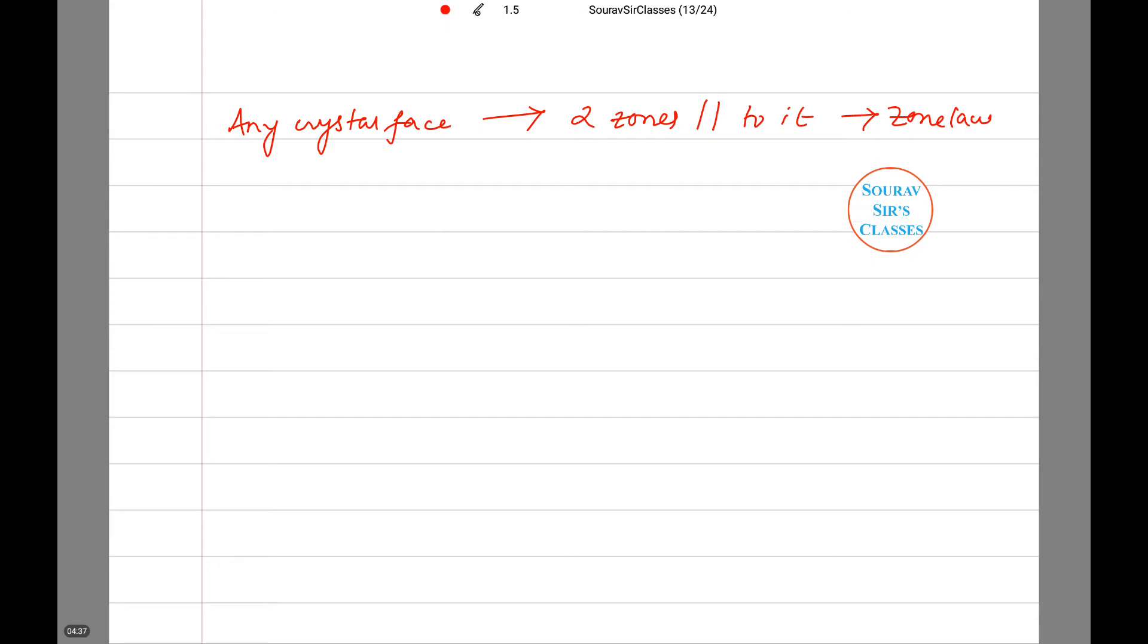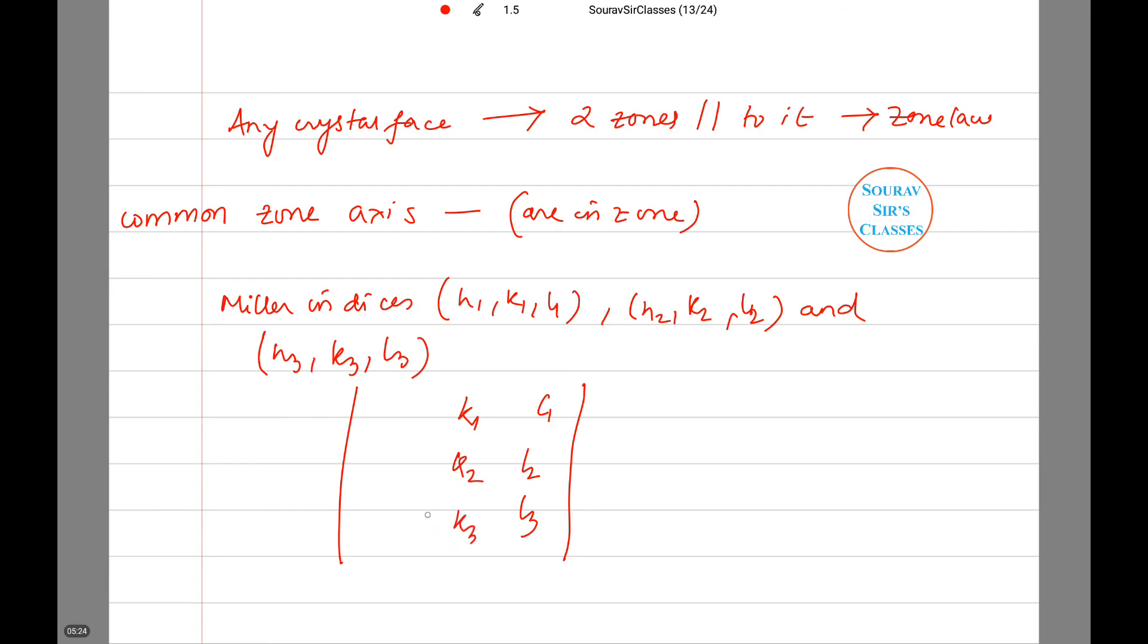For three lattice planes to have a common zone axis—or we can say they are in zone—the Miller indices (h₁, k₁, l₁), (h₂, k₂, l₂), and (h₃, k₃, l₃) must satisfy this relation: the determinant equals zero, where the matrix rows are h₁ k₁ l₁, h₂ k₂ l₂, and h₃ k₃ l₃.